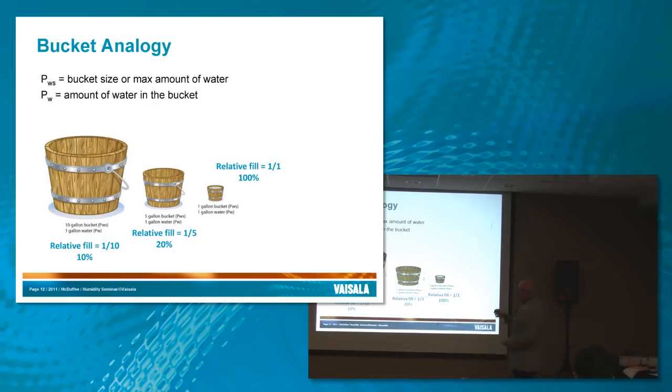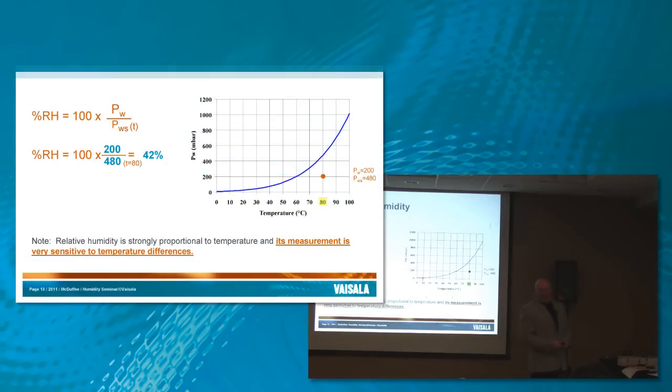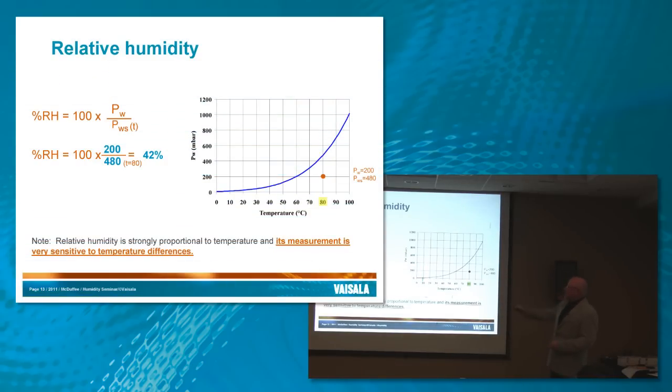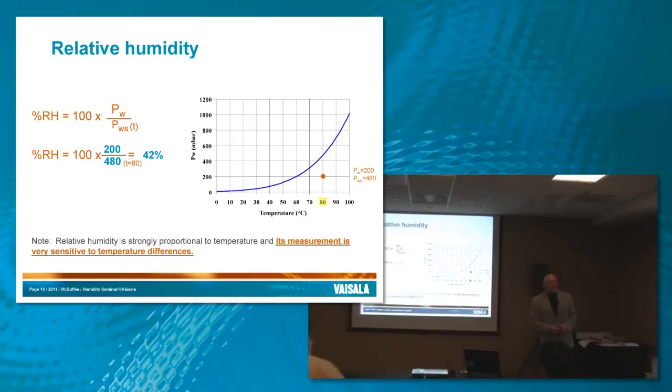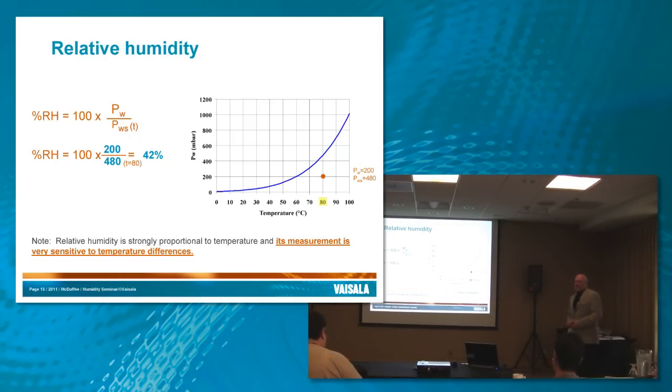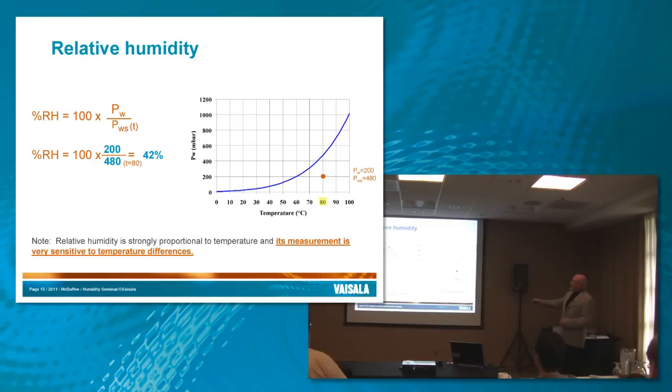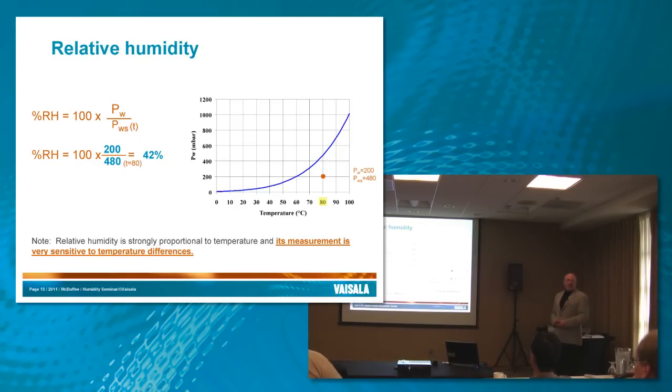So in this case, PWS changes as you change the temperature, and so the relative amount of fill changes. It's mathematically, it's just a ratio, PW divided by PWS. So in this case, PWS was like our bucket size, and PW would be the amount of water.